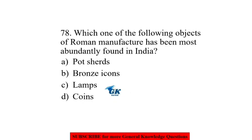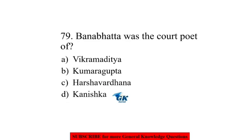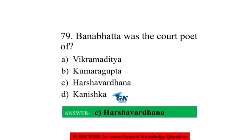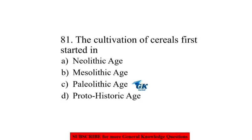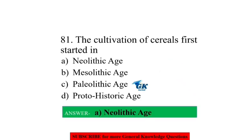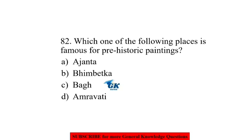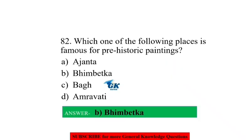Which object of Roman manufacture has been most abundantly found in India? Coins. Vana Bhatta was the court poet of Harshavardhana. The cultivation of cereals first started in the Neolithic Age. Which place is famous for prehistoric paintings? Bhimbetka.